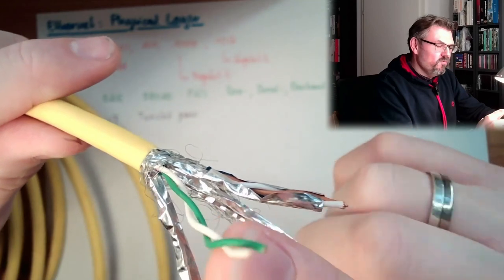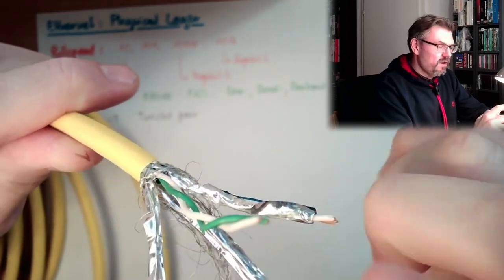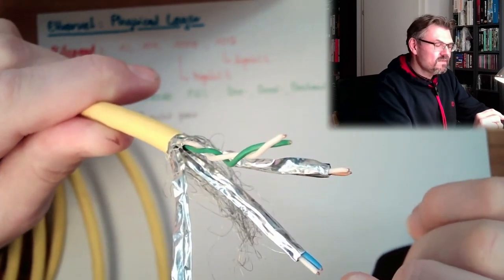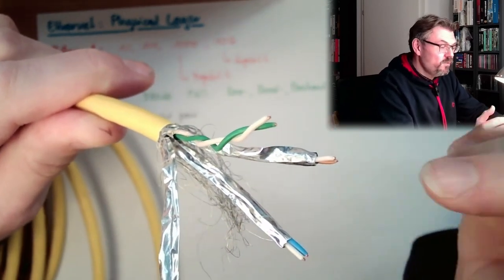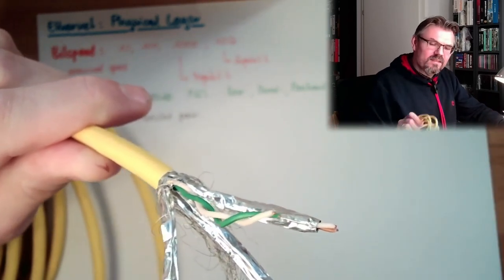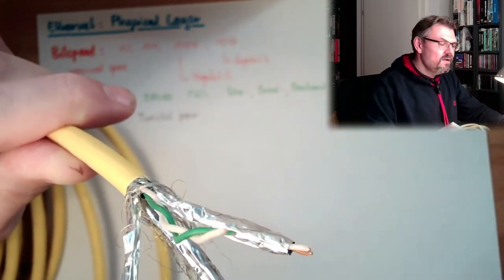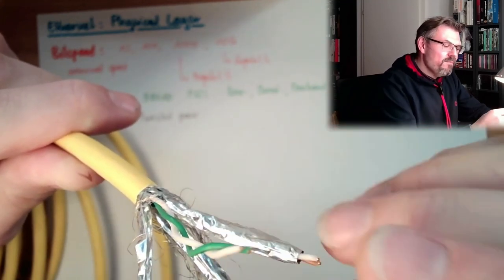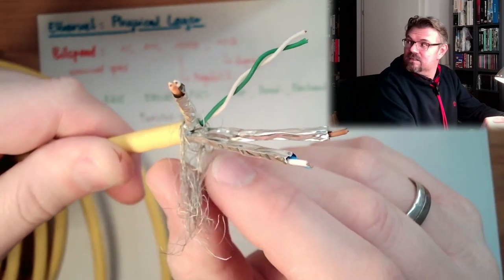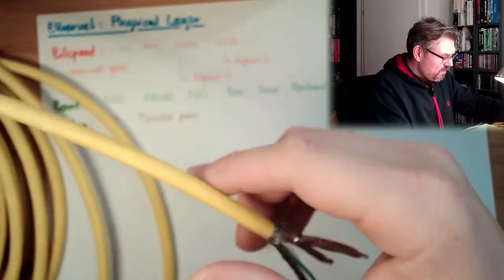What is this type? Category 5. And this here is a category 7 cable. And here we can see why it's called twisted pair. We have here a pair of wires and they are twisted all the way through the cable. Here I have removed the shielding. Here they are still shielded.